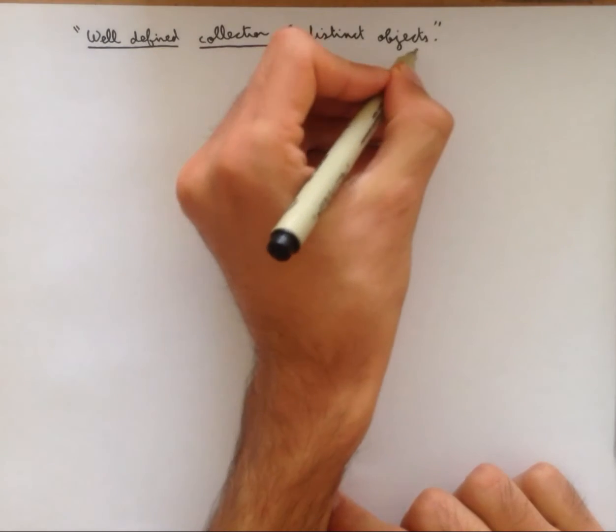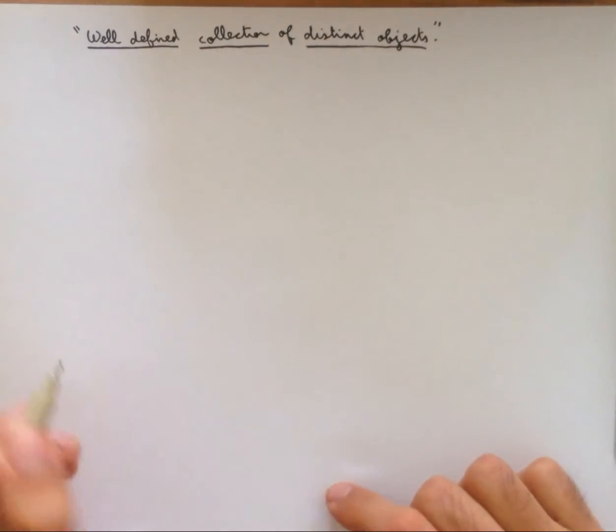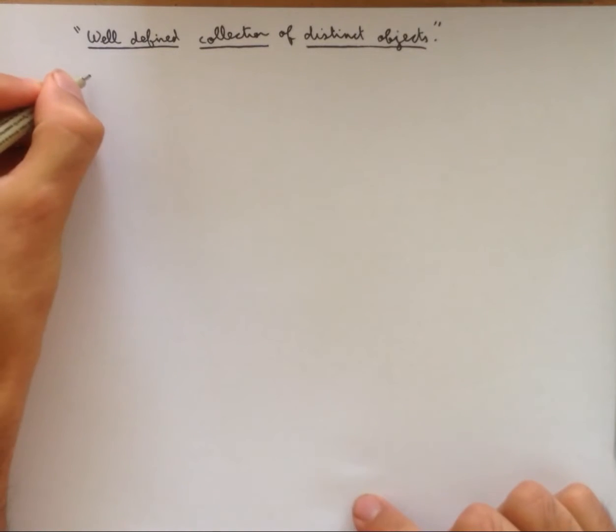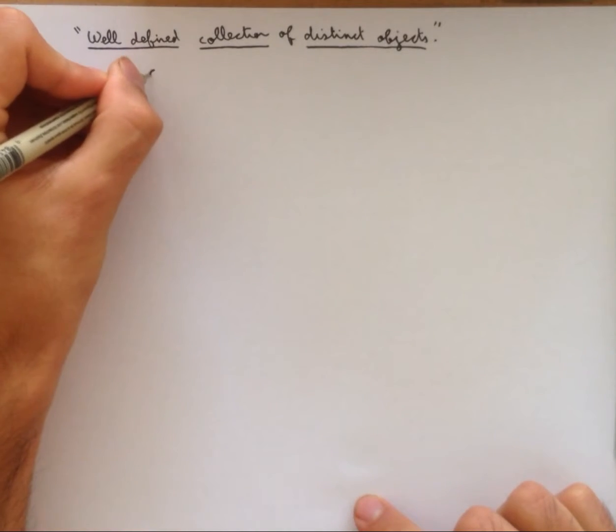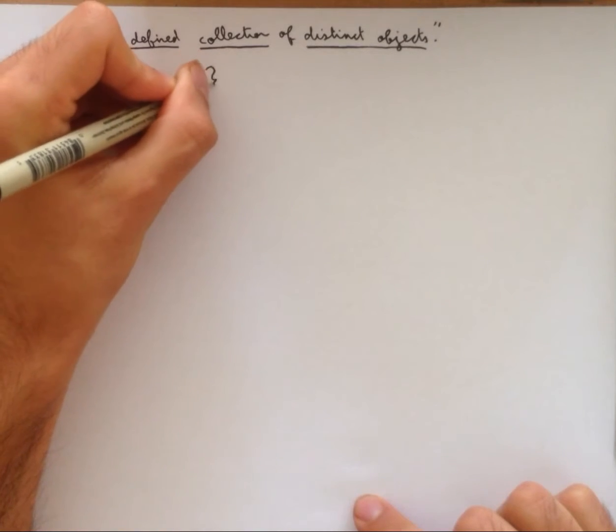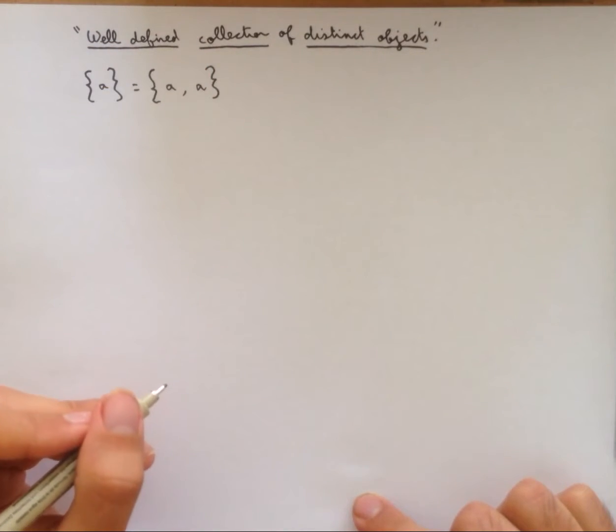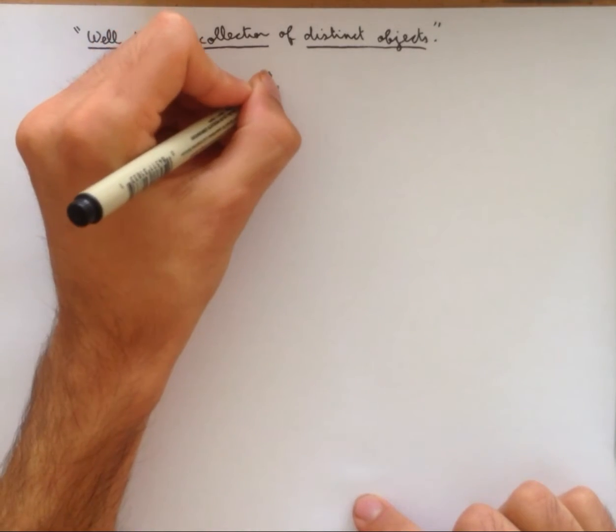And finally, distinct objects. And so this means that the things that we put into our set have to be different. If you put the same thing in a set twice, it does not change the set. So for example, set containing a is equal to the set containing a and a. And we have a special word for these sets that only contain one element, and we call them singletons.